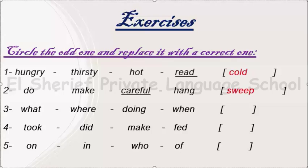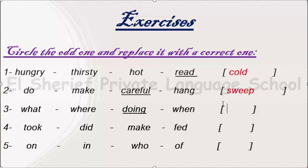Number 3: what, where, doing, when. The different word here is doing — what, where, and when are question words. So we will replace doing with a question word, for example, who.